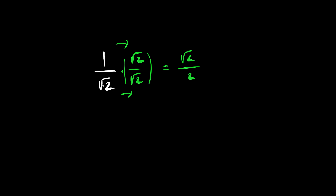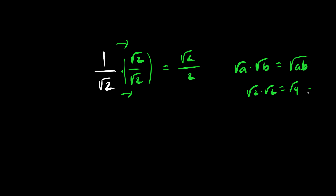In general, the square root of a times the square root of b is the square root of ab. In this case, root 2 times root 2 is root 4, which is 2. And if we have root 5 times root 5, the answer is simply the inside, 5.